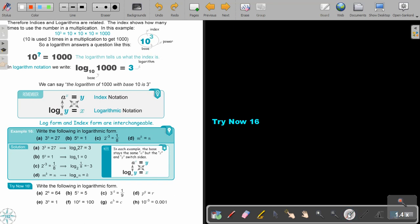Let's look at an example. Write the following in logarithmic form. So 3 to the power of 3 is 27. So keep the base and swap that two. Keep the base and swap that two.